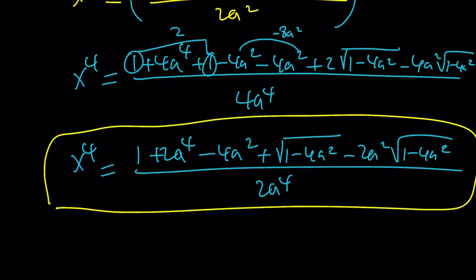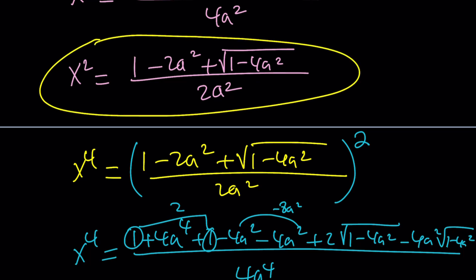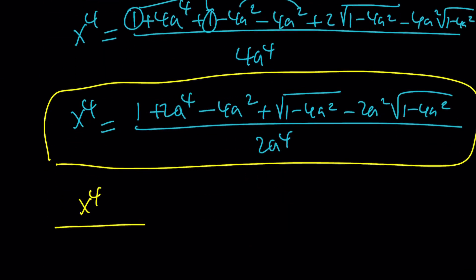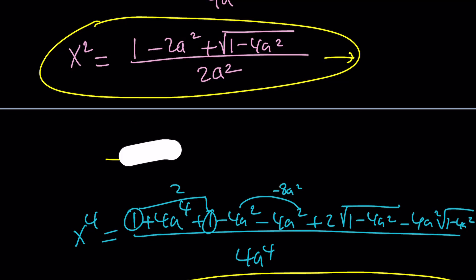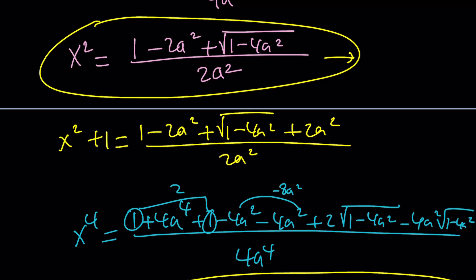And this is x squared. So we're going to go ahead and plug those in. Basically, we'll put it together. Our goal is to evaluate x to the fourth divided by x squared plus 1. So you may want to do the x squared plus 1 first. Let's just add 1 to this. If you add 1 to it, something interesting is going to happen. Let me show you. If you add 1 to it, x squared plus 1 is going to be 1 minus 2a squared plus the square root of 1 minus 4a squared plus 2a squared over 2a squared, because 1 is 2a squared over 2a squared. And these two are going to cancel out, leaving us with something a little simpler, which is a little nicer.